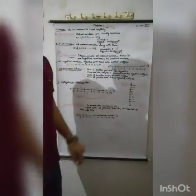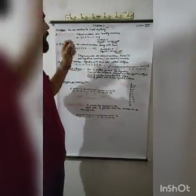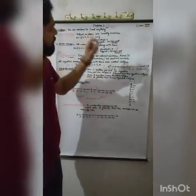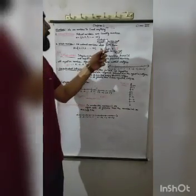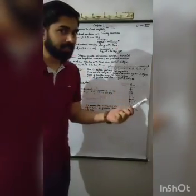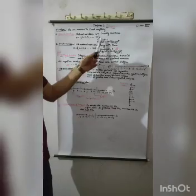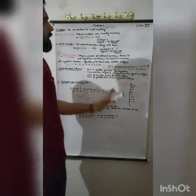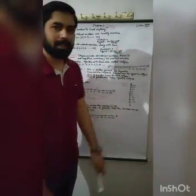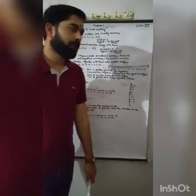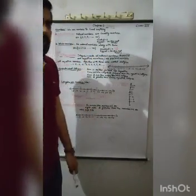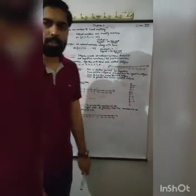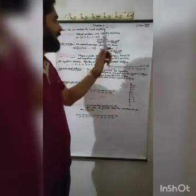Natural numbers are always denoted by capital N. In the set of natural numbers, the smallest number is 1 — this is a very important point. If a question asks which is the smallest natural number, you always write: 1 is the smallest natural number. And there is no biggest natural number — it does not exist.